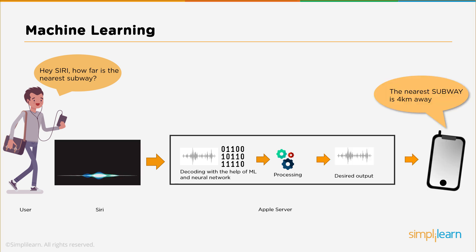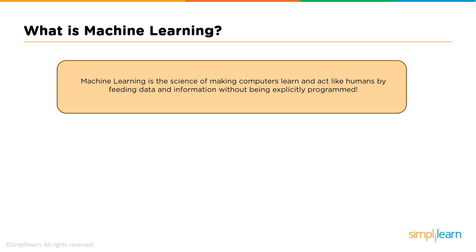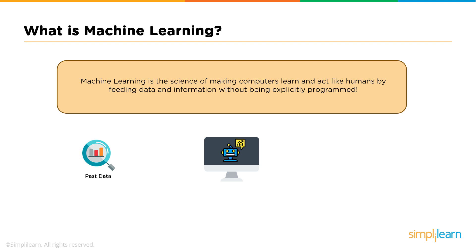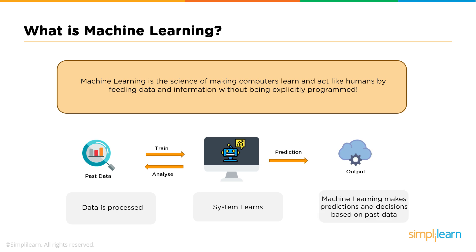This is what machine learning is all about — making machines learn and act like humans by feeding them data and information without being explicitly programmed. As we saw in the previous example, when data comes in, machines immediately start analyzing it, get trained on it, and learn it. When a new data point comes in, the machine accurately makes predictions and decisions based on the past data.